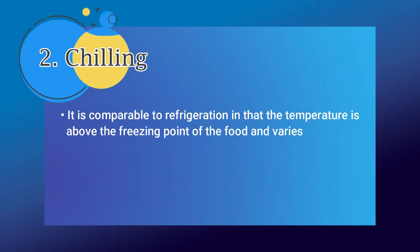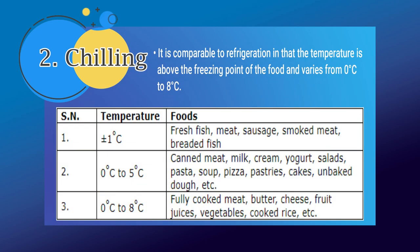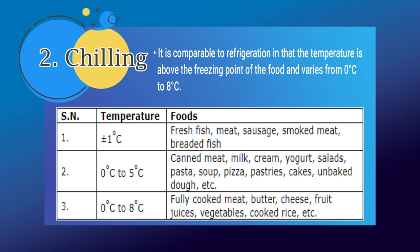Chilling is comparable to refrigeration in that the temperature is above the freezing point of the food, varying from 0 to 8 degrees Celsius. With the help of this diagram, you can see what food requires which temperature. 1 degree Celsius includes fresh fish, meat, sausage, smoked meat, and breaded fish. 0 to 5 degrees Celsius includes canned meat, milk, cream, yogurt, salad, pasta, soup, pizza, pastry, cakes, unbaked dough, etc. 0 to 8 degrees Celsius includes fully cooked meat, butter, cheese, fruit juices, vegetables, cooked rice, etc.